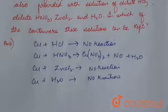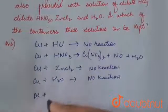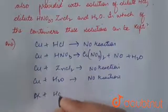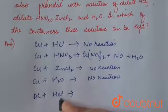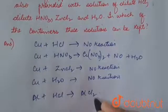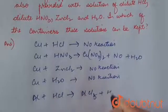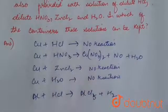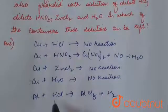Now, reaction of these solutions with aluminium. Aluminium reacts with HCl, forming aluminium chloride, so we cannot store hydrochloric acid in the aluminium container.